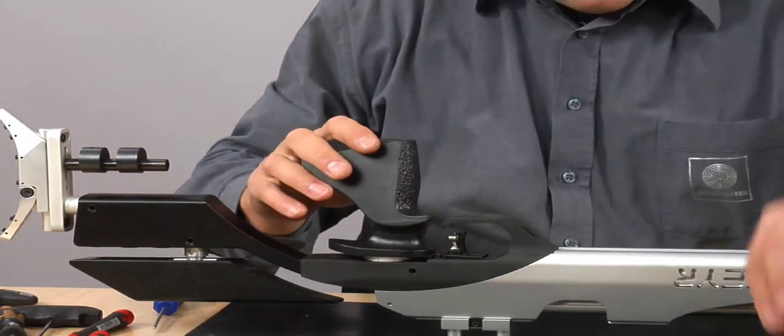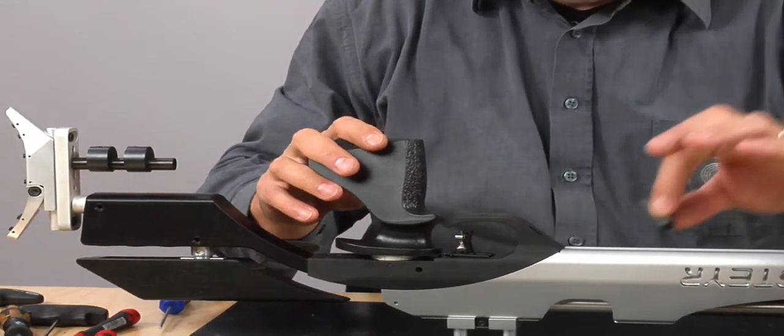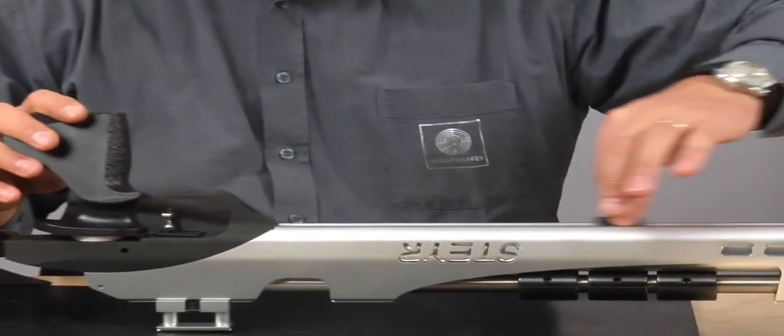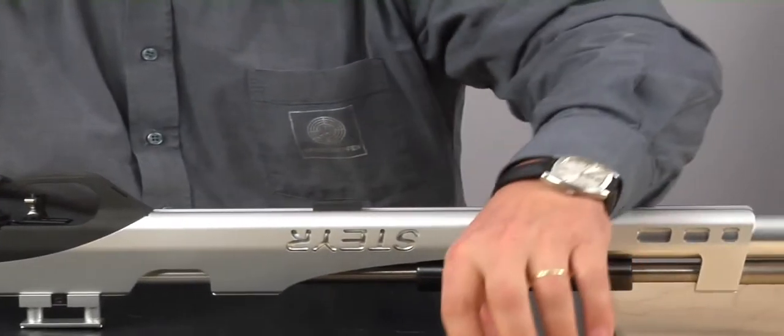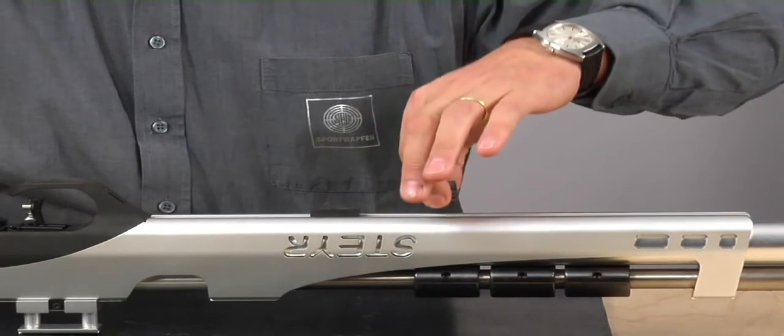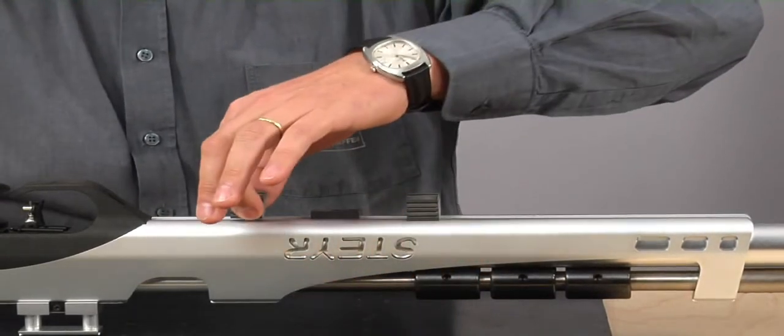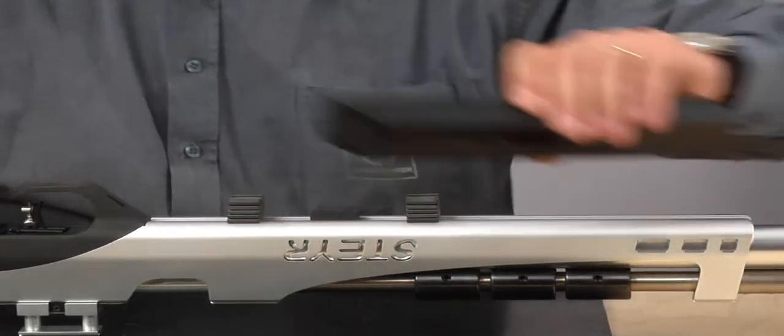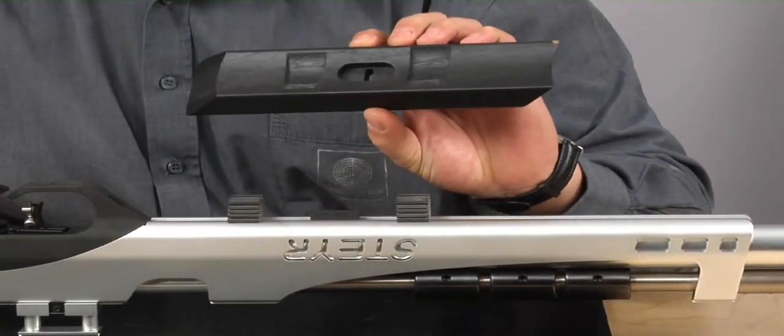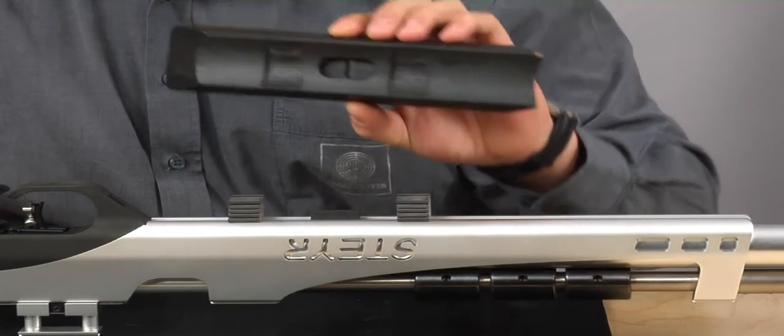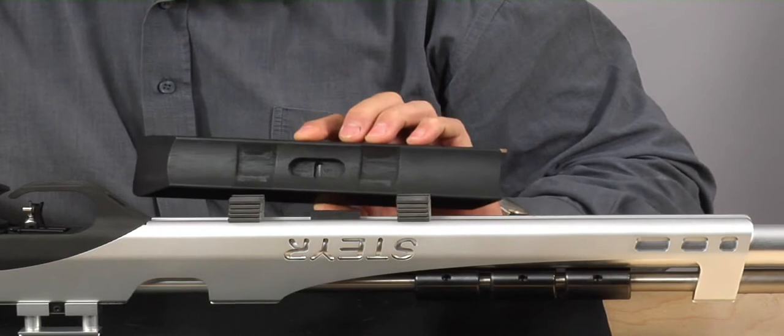Mount the forearm including the sliding block. Insert the sliding block from the front followed by the spacers. The forearm has hollows for the spacers on the right and left side. Therefore, the spacers must be in the area of these hollows.